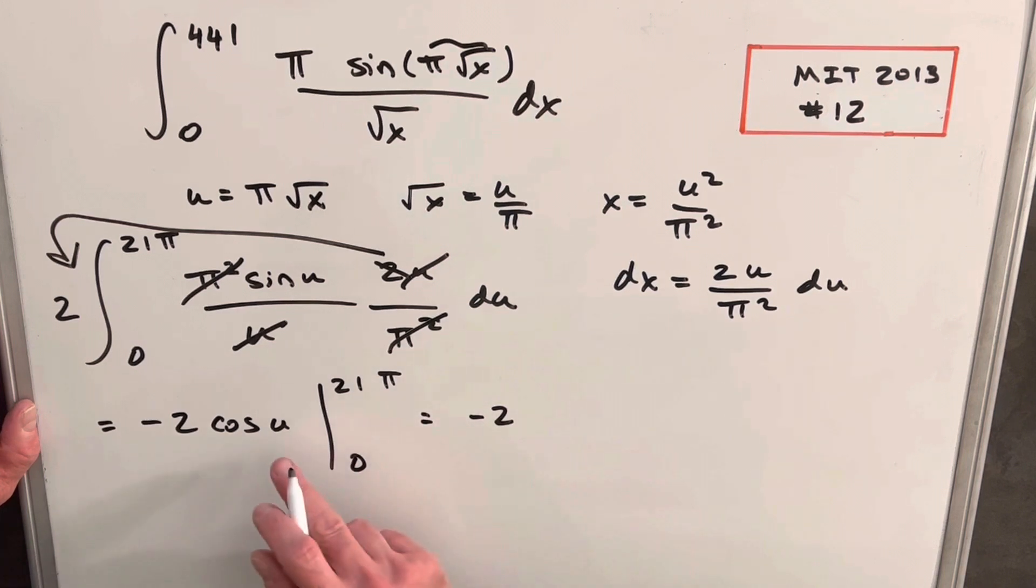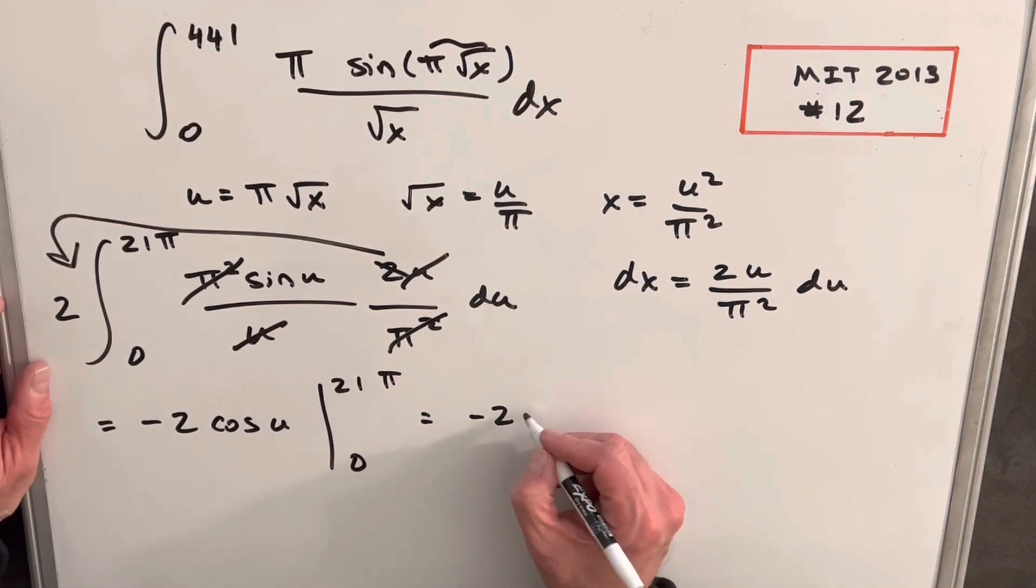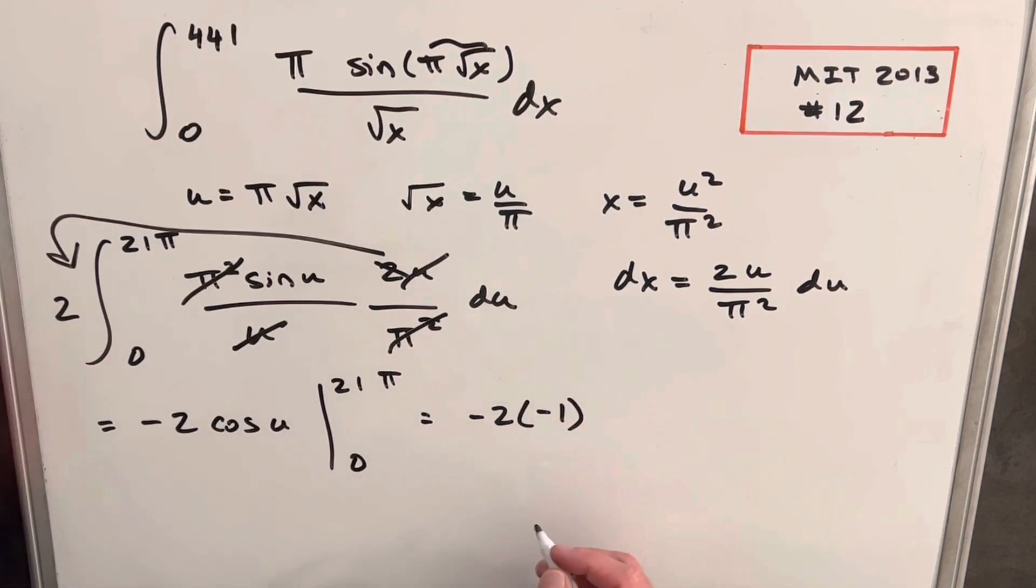So evaluating this, we're going to have minus 2 cosine of 21 pi. That's going to be, because that's an odd value, that's the same thing as evaluating at pi. So that's going to be a minus 1 right there for cosine of 21 pi.